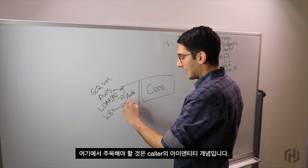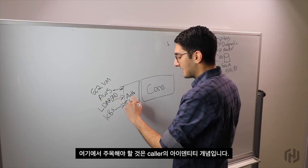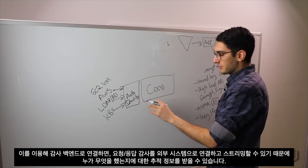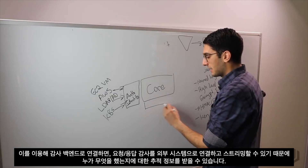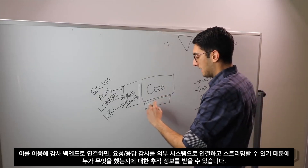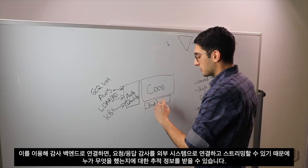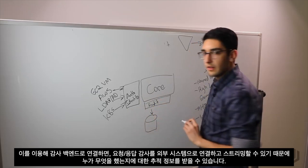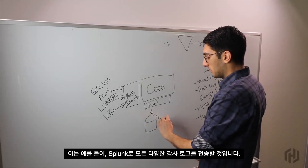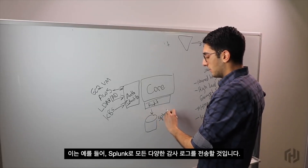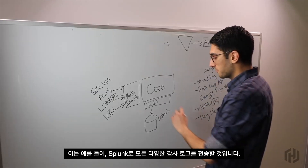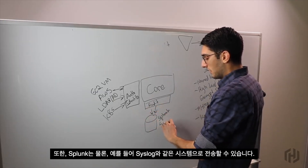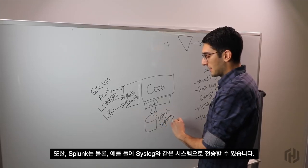The goal of these authentication providers is to take some system we trust — whether it's Kubernetes, LDAP, or AWS — and use this to provide application or human identity. At the end of the day, what we're getting out of this is a notion of the identity of the caller. We then use that to connect to an auditing backend, which allows us to stream request-response auditing to an external system, giving us a trail of who's done what. This might be Splunk, and Vault allows us to have multiple different audit logs — we can send to Splunk as well as a system like Syslog.